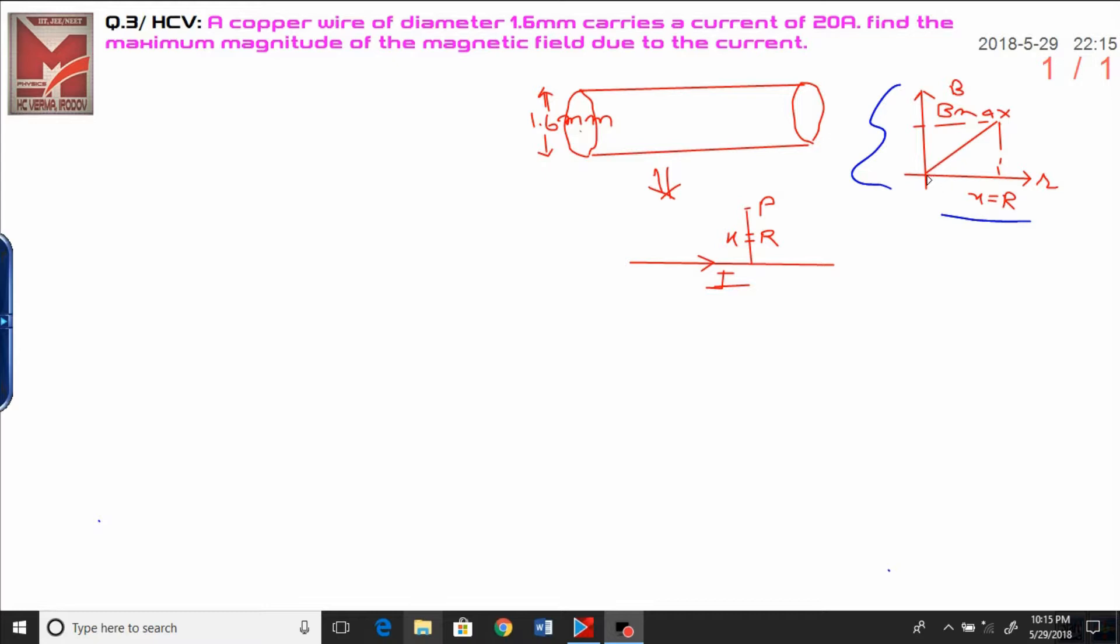Inside the conductor, magnetic field is directly proportional to the distance till the surface of the conductor. It will vary directly and after it becomes maximum. This means we will get the maximum magnetic field when distance becomes equivalent to radius of the conductor.